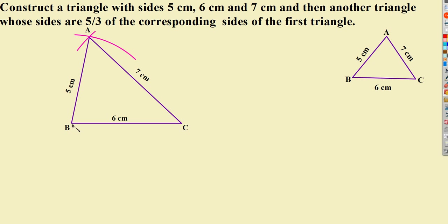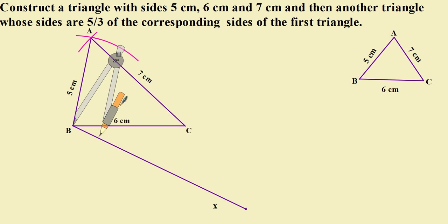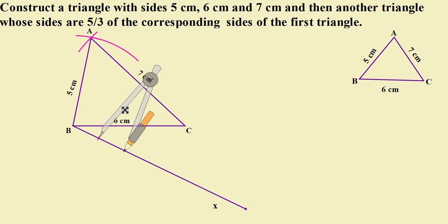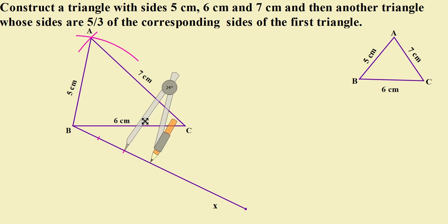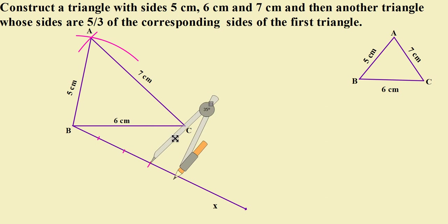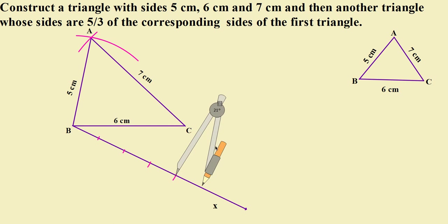Now you have to draw a ray Bx making an acute angle with BC, opposite to the side of vertex A. Now locate 5 points on Bx — say B1, B2, B3, B4, and B5 — such that BB1 = B1B2 = B2B3 = B3B4 = B4B5.